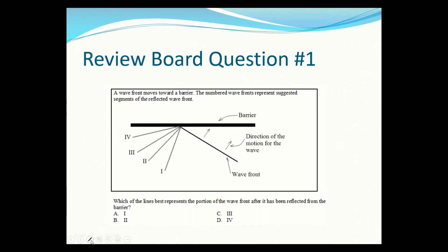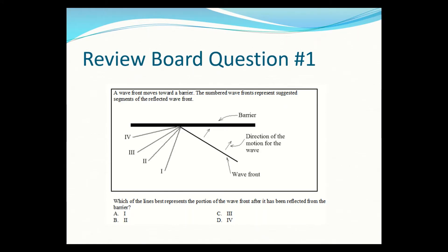A wave front moves towards a barrier. We want to find the line that represents it being reflected — the angle of reflection should equal the angle of incidence. It looks like option three would have the same angle, so three is the reflected line.